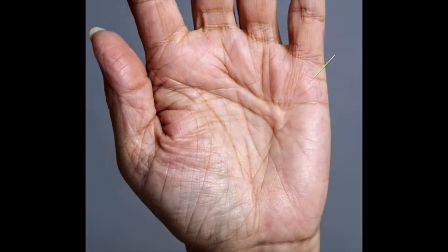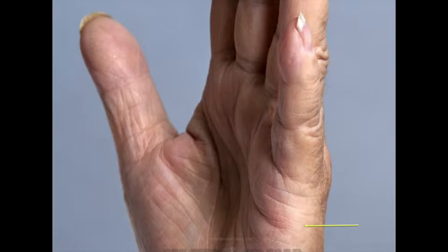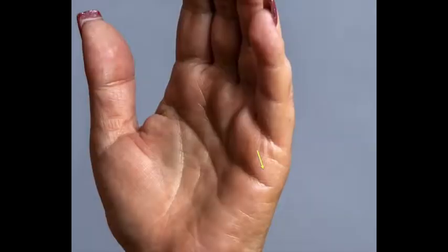If a relationship line ends in a fork there's likely to be a separation ending that relationship. If a relationship line bends down to touch the heart line it's likely that the relationship will end in a legal situation such as a divorce or legal division of property. Often it can mean the same thing when it bends down towards the heart line without actually touching it.